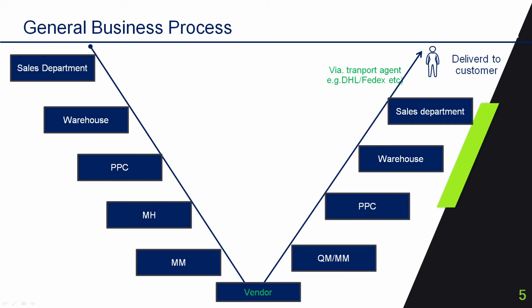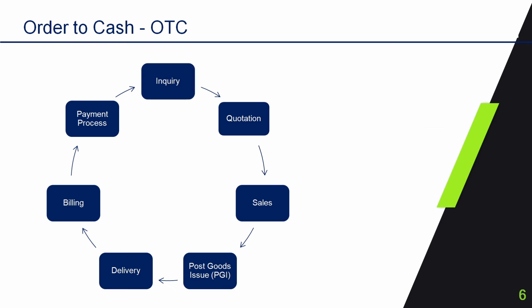The sales department will issue a delivery note, and with the support of the warehouse outbound department, using internal or external courier such as DHL, FedEx, or other courier services, the material will be delivered to the customer's premises. If there is a delivery outside the country, customs documents are required before the material leaves the warehouse. You must have realized now that SAP SD is closely integrated with SAP PP (Production and Planning) and SAP MM (Material Management) modules.